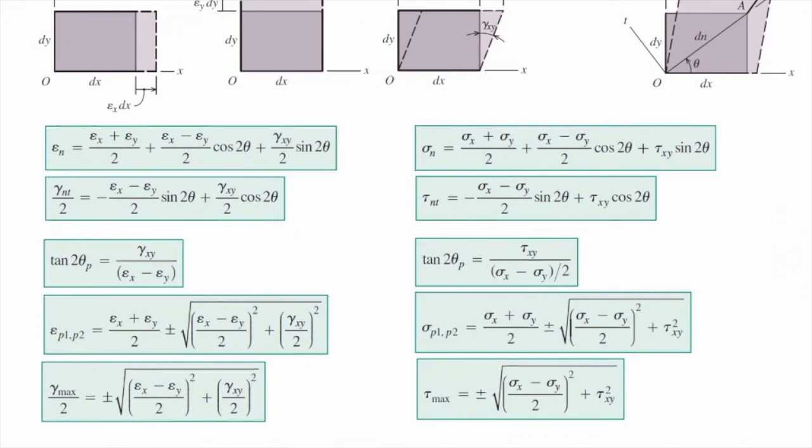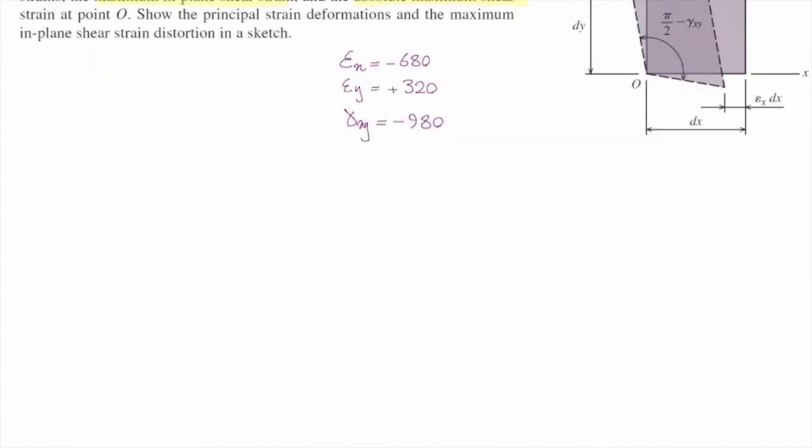The problem that I will solve is similar to what I have solved so far. Instead of using sigma, I'm using epsilon. And instead of using tau, I'm using half of gamma. Let me quickly solve this problem.